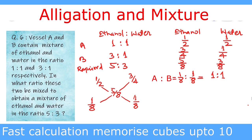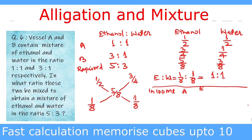We can verify this. Say both vessels have 100 ml of solution. In vessel A, half is ethanol and half is water, so 50 ml ethanol and 50 ml water. In vessel B, ethanol is 3 parts out of 4, so it is 75 ml ethanol and 25 ml water.